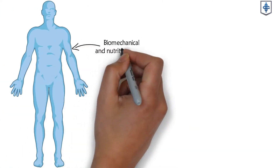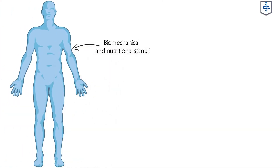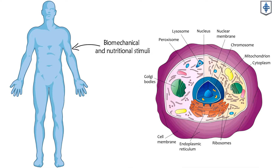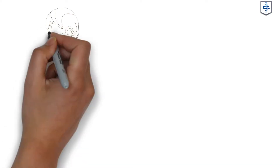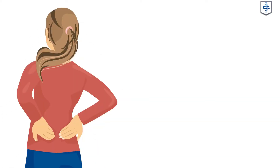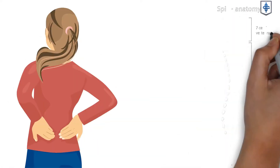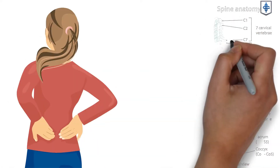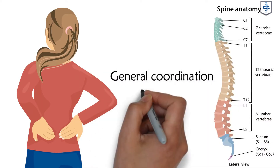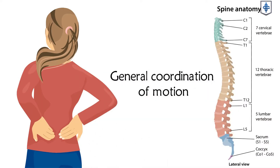Biomechanical and nutritional stimuli is different from tissue to tissue, and we are consequently treating patients according to cellular responses. When pain is inhibited, range of motion is achieved, and joints move around physiological axis, we focus on the general coordination of motion.